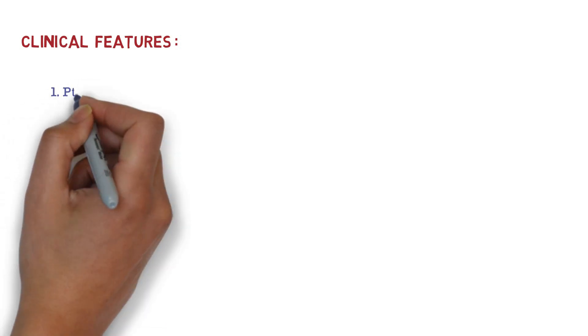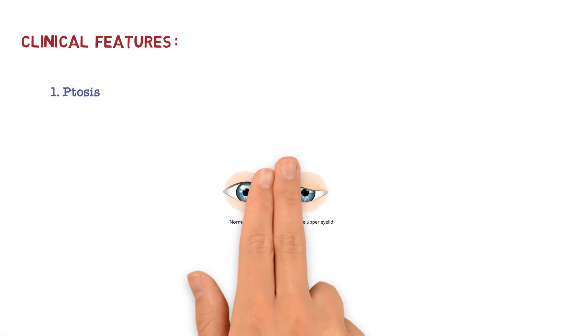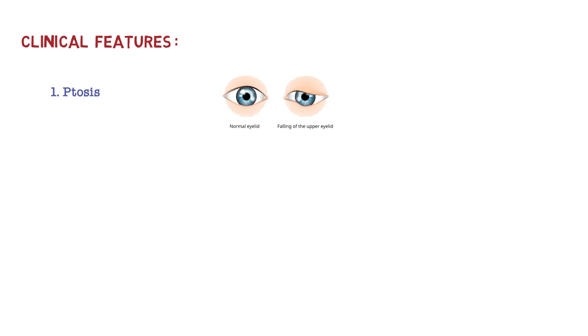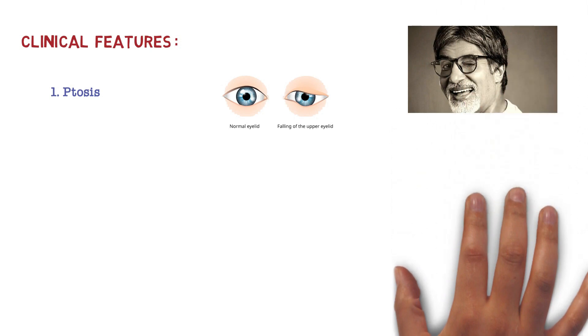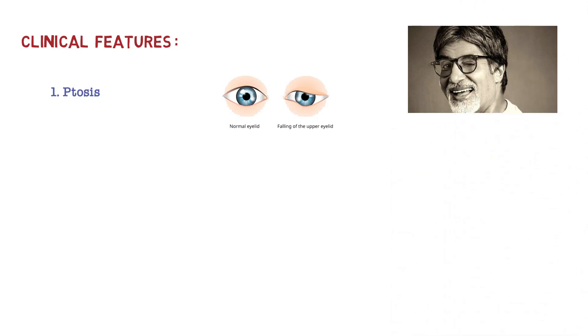Now let's talk about the clinical features. The very important clinical feature is ptosis. Look over here, this is the normal eyelid and you can see falling of upper eyelid. Ptosis is asymmetrical and triggered by use of extraocular muscles, like when we watch TV, use the phone, laptop, or watch a movie. There is easy fatigability. You can see the image of Amitabh Bachchan and remember that it is ptosis.